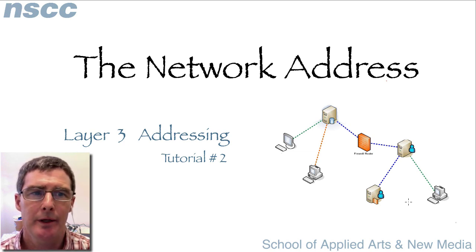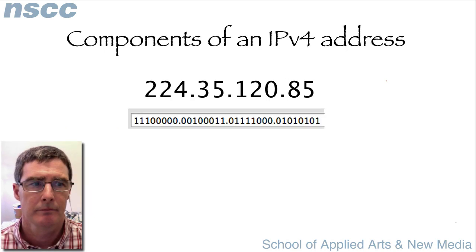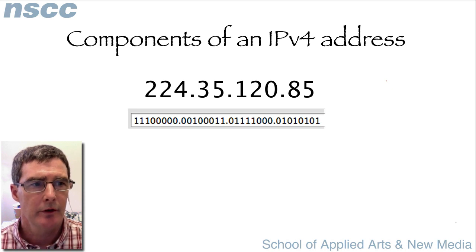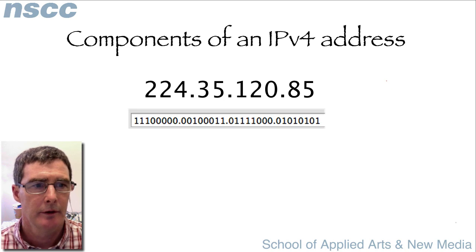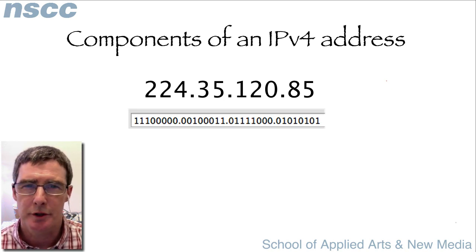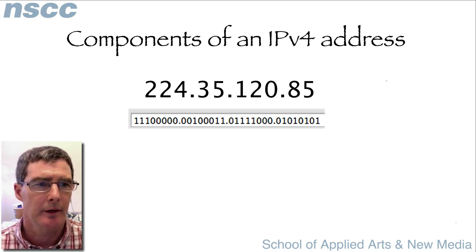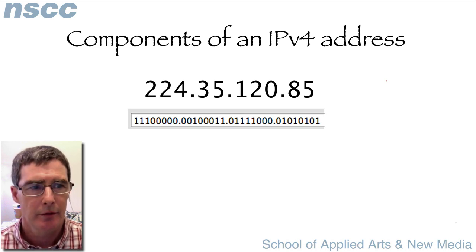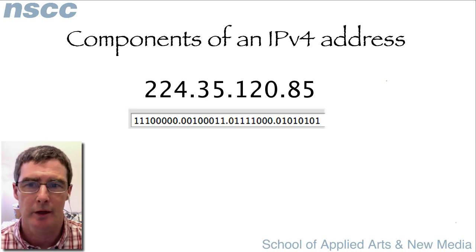We start by looking at how a network address is composed. Every network address is a composite of two parts. The first part is the address of the network itself. Although a network will have several devices, the network portion of their addresses must remain constant. The second part of a device's address is referred to as the host part, which is unique among devices and ensures that no two devices have the same address.